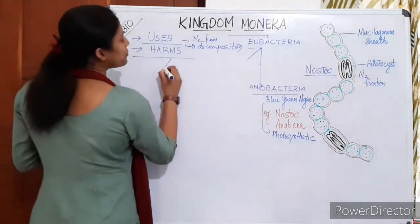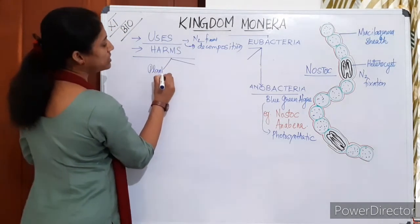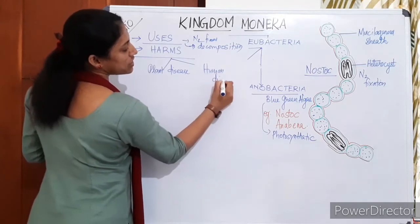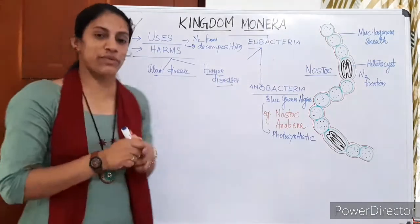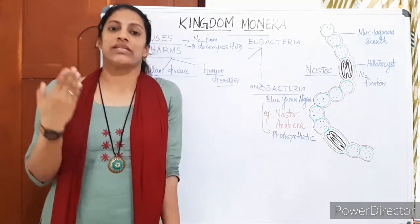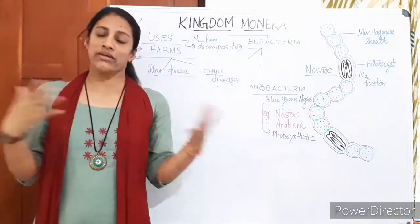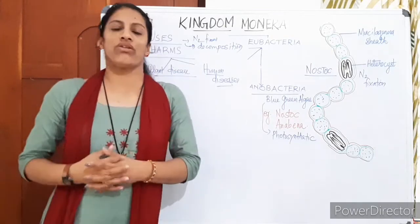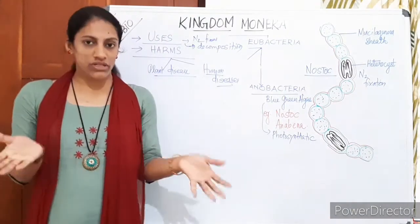Also write the harms of bacteria: the major plant diseases and human diseases caused by bacteria. The harms include plant and human diseases. Focus on naming the major ones. This is your homework — find out the uses and harmful effects of bacteria.